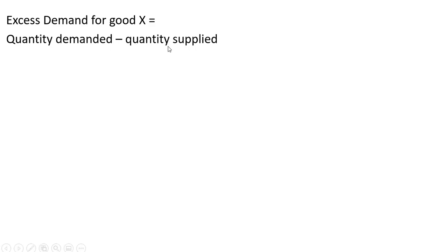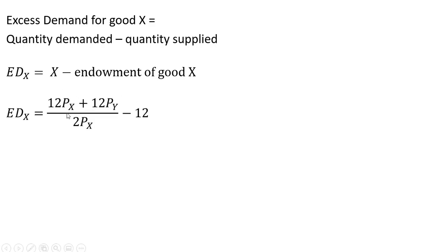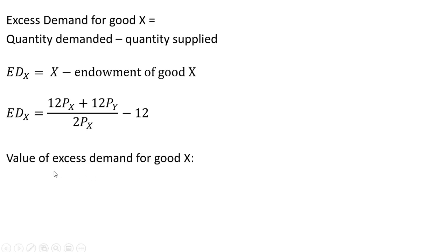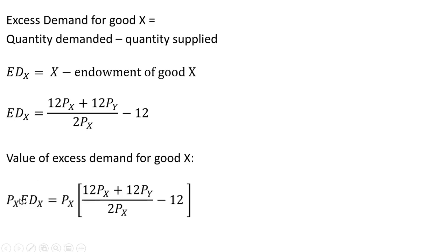The excess demand for good X will be the quantity demanded minus the quantity supplied. The quantity supplied of good X will be the initial endowments from consumer one plus that of consumer two. So excess demand for good X equals X minus the endowment of good X. The aggregate demand for good X we just solved, minus 12, represents the total endowment — consumer one had 10 units and consumer two had two units. The value of the excess demand for good X is the price of good X multiplied by the excess demand for good X.